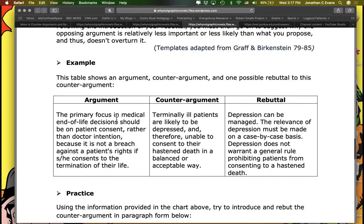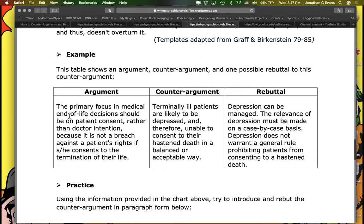And then they've got an example here. And they actually give you the chance to practice. So here's the argument. The primary focus in medical end-of-life decisions should be on patient consent rather than doctor intention because it is not a breach against the patient's rights if she or he consents to the termination of life. That's the argument being presented by somebody. Counterargument. Terminally ill patients are likely to be depressed and therefore unable to consent to their hastened death. So they're pointing out a flaw in the logic. The argument is saying this, but they're saying, but what about terminally ill patients who maybe are not in the right state of mind? Rebuttal. Depression can be managed. The relevance of depression must be made by a case-to-case basis. Depression does not warrant a general rule prohibiting patients from consenting to hastening death. So that's an example of argument, counterargument, rebuttal.